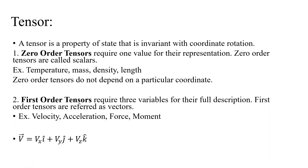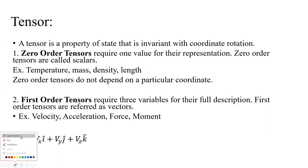Students often ask me: what is NOT a tensor? Anything that does not satisfy the definition. The components vx, vy, vz — the component in the x direction, the component in the y direction, and the z direction — these components are not tensors, because they are not independent of coordinate rotation. If you rotate your coordinate and change x, y, and z, these values are going to change, and therefore they are not tensors.